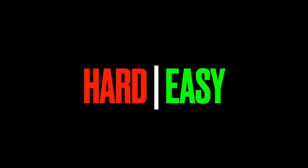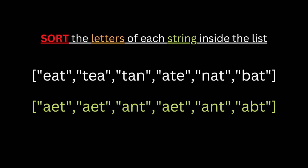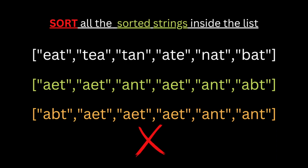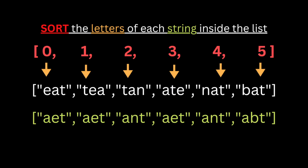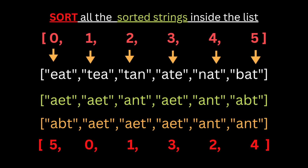There are two ways to solve this problem: the hard way and the easy way. For the hard solution, we will try to put all of the letters in each string into alphabetical order, and after that we sort all the words inside the list alphabetically. But the problem is we don't know how to find the original word from which we can make an anagram, so we need a different approach.